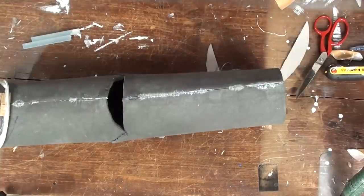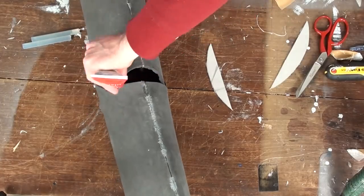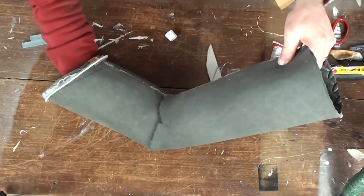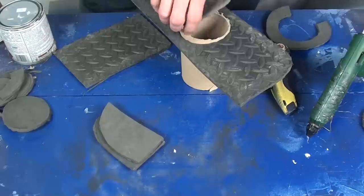Okay, so for the elbow bend I just cut a sort of a mouth shape, put some shoe goo on, and glued it into place. Nice easy bend.